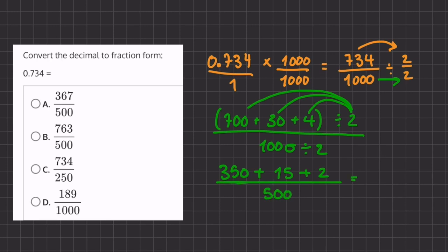350 plus 15 will give us 365 plus 2, all over 500. And we'll add again our numerator: 365 plus 2 will give us 367 all over 500. And because we cannot further simplify, this will be our final answer.